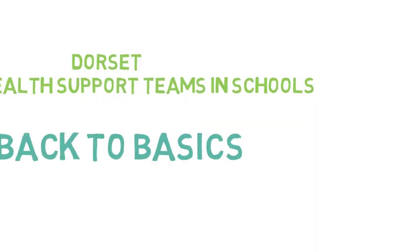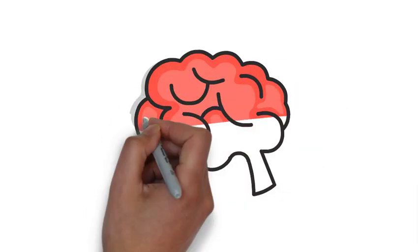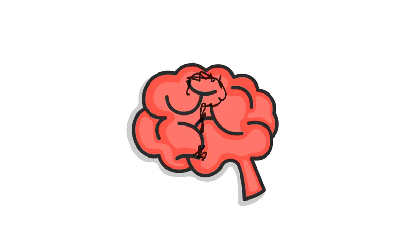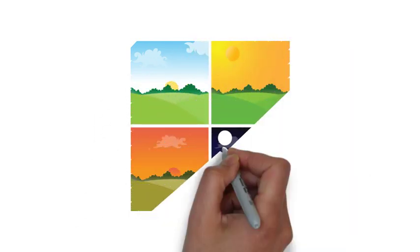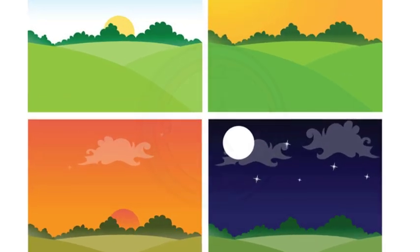Back to basics. After a long time at home it can feel really overwhelming going back to school. Here are some things that you can do to help make it a little easier. Routine is the foundation to looking after our emotional well-being. Our bodies are like clocks and feel more comfortable when they run to a schedule.